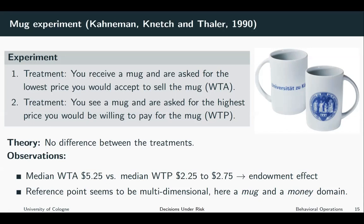Now, if losses loom larger than gains, you would prefer to more or less stick to the status quo. This means if you already have a Mug, you're not willing to give it up to get money; and if you don't have a Mug, you're not willing to give up money to get one. So loss aversion can rationalize the observations in the famous Mug experiment.